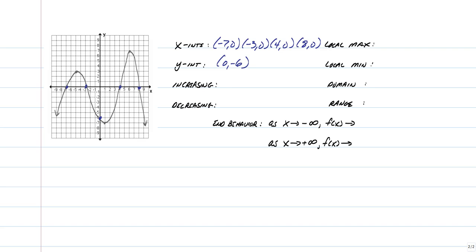Where are local maxes and local mins? Well, I hope you weren't tricked by this, but you have two local maximums — it goes from increasing to decreasing twice. One of them was at negative five comma three, and the other one was when we got to six comma seven. We have one local minimum — that's where we're at the bottom of the graph — and that's at one comma negative seven.